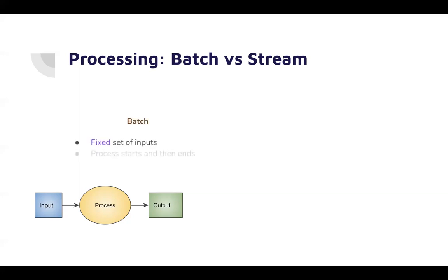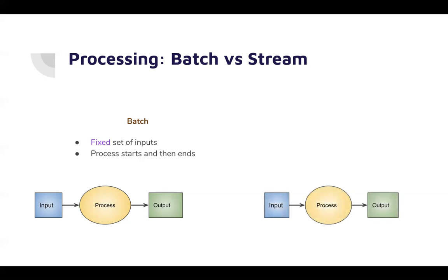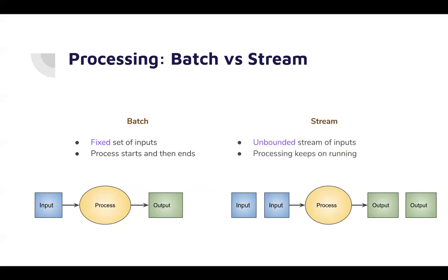In stream processing there is an input, a process, and an output, but the difference is your process ideally runs for an infinite duration. It keeps on getting new inputs and producing new outputs. Your input is unbounded, your output is also unbounded, and your process keeps on running. This is the key difference between batch and stream processing.